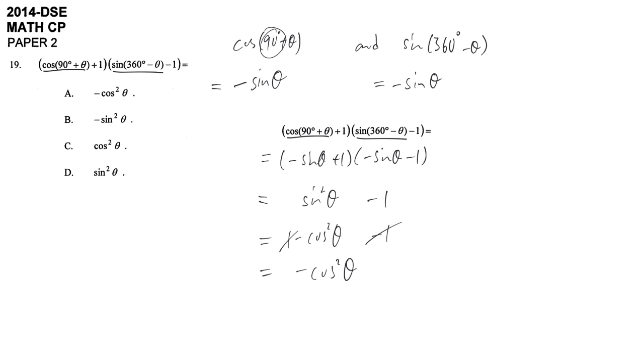Some of you may not understand why this will become this one, so I'm now going to demonstrate. It's because of the identity: sine square theta plus cosine square theta will be equal to one.